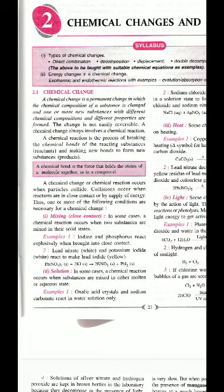Why reactions? Because children, the chemical changes lead to formation of new compounds. The reactions between the two compounds to form a new product, new compound. Chemical change is a permanent change in which the chemical composition of the substance is changed and one or more new substances with different chemical compositions and different properties are formed. The change is not easily reversible. A chemical change always involves a chemical reaction.